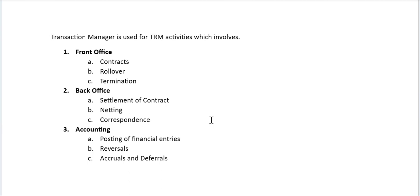Treasury and risk management activities are handled within a single transaction manager. There are three types of activities: front office, back office, and accounting. The front office creates contracts with banks and traders, performs rollovers when renewing contracts before the expiry date, and carries out terminations at the end of a contract.